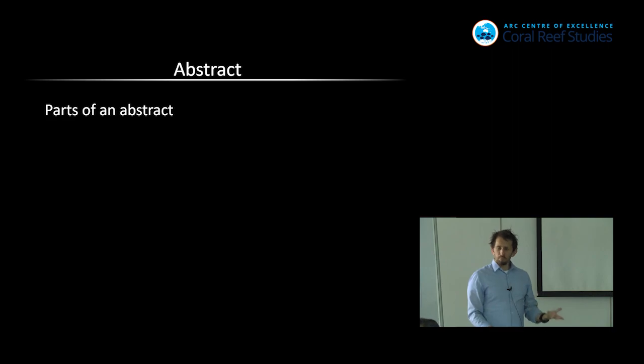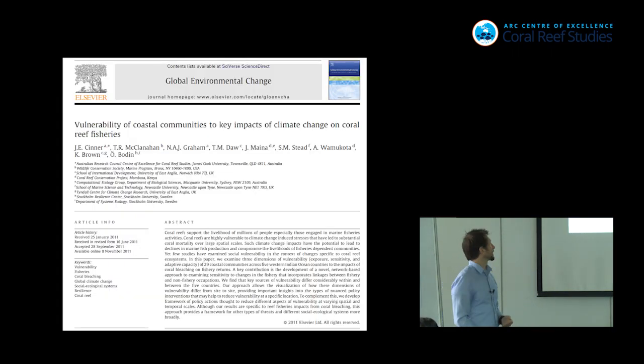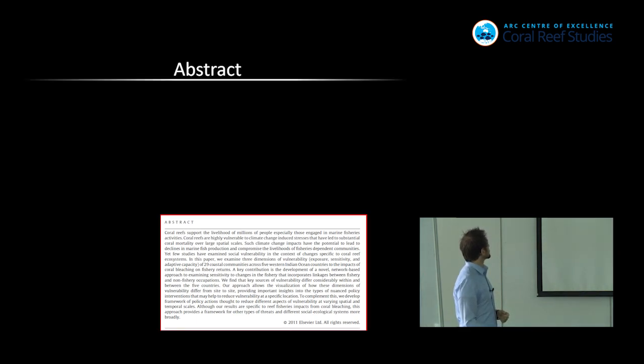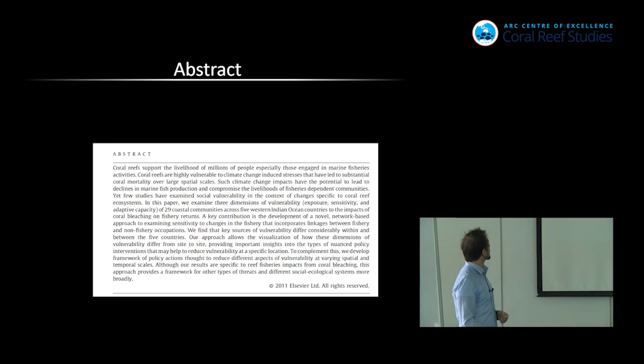Okay, so what are the different parts of an abstract? I want to do it by going through one of the papers that I did a few years back. So we'll just sort of zoom into that. So the first part is really the background. This is just sort of the stuff that you need to know to understand the rest of it. Coral reefs support the livelihoods of millions of people, blah, blah, blah.